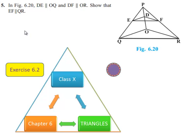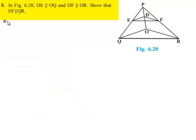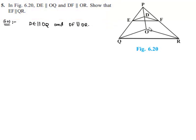Moving on to the fifth question: in figure 6.20, DE is parallel to OQ and DF is parallel to OR. Show that EF is parallel to QR. Moving on to the solution, it is given that DE is parallel to OQ and DF is parallel to OR, and we are asked to prove that EF is parallel to QR.